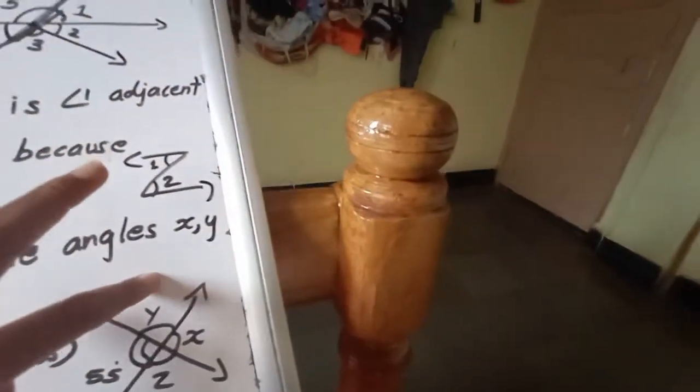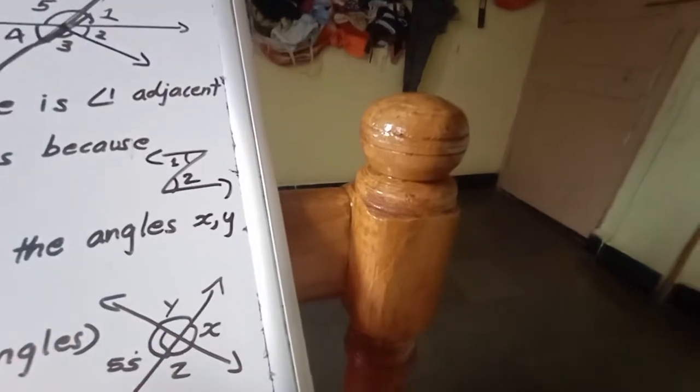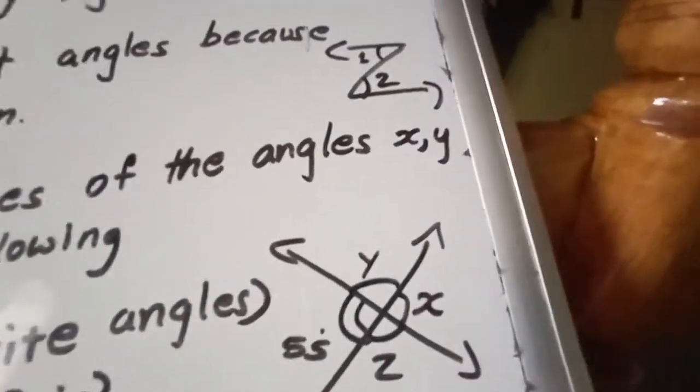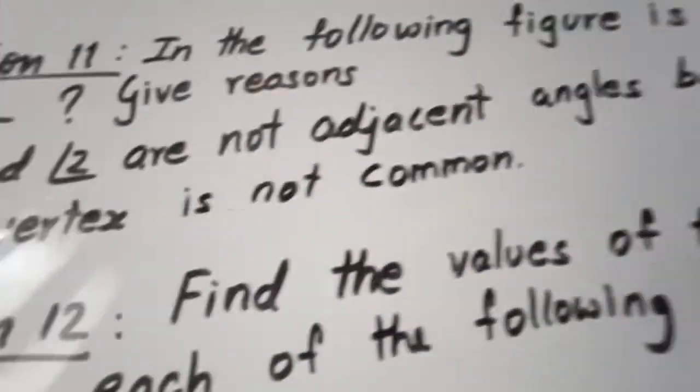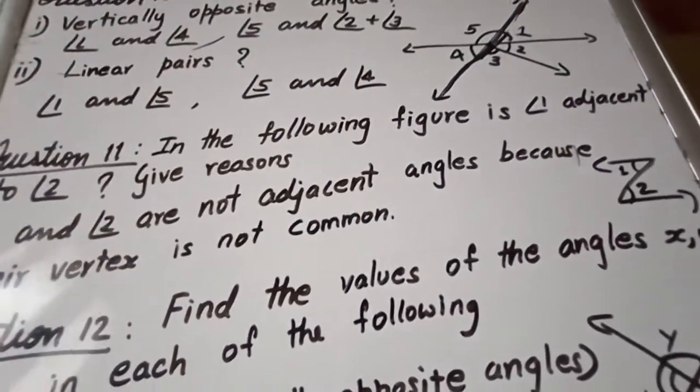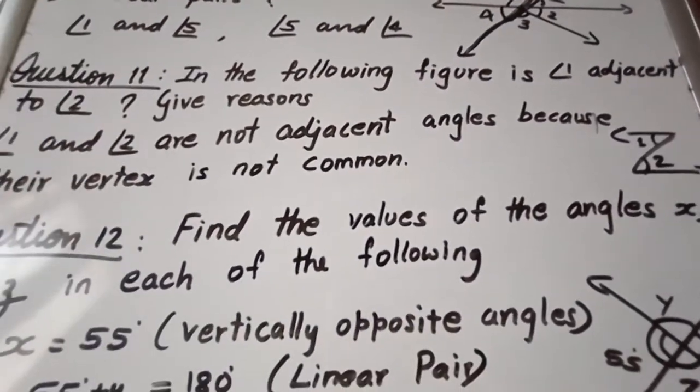If you come to know Y, then again vertically opposite also, you can find out Z also. In this way, let us calculate. Hope you understood by the help of the figure only. But we require the steps. X is equal to 55 because vertically opposite angle.